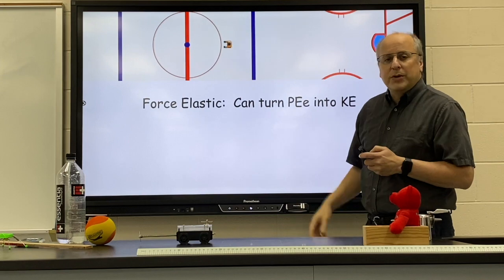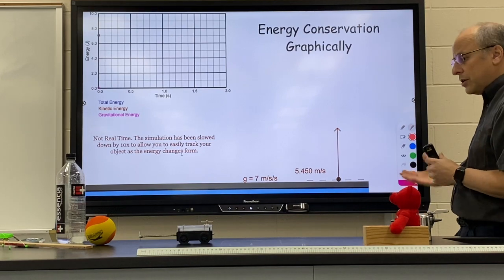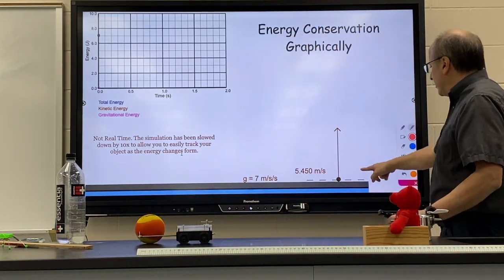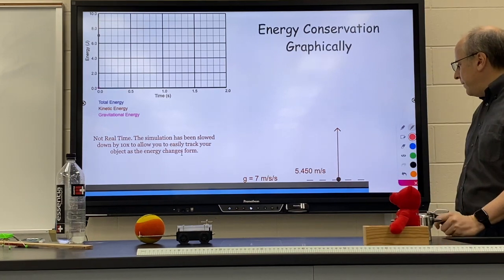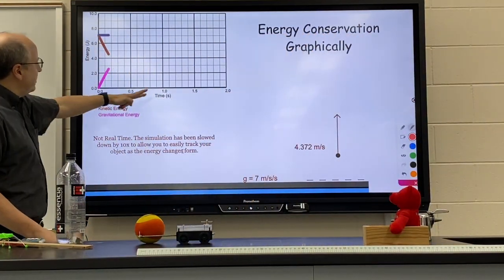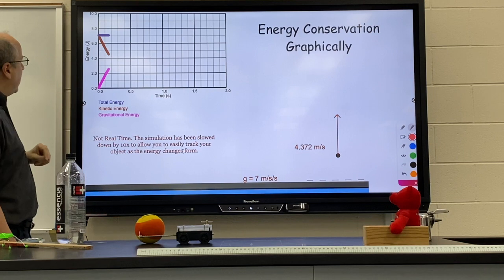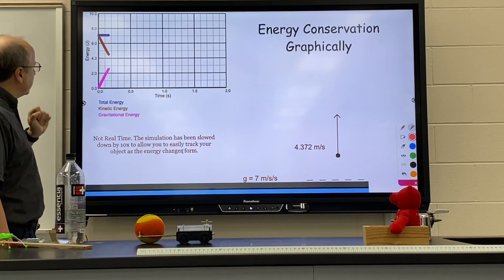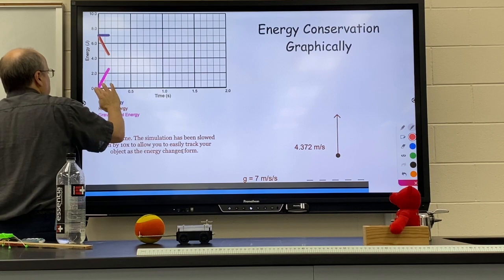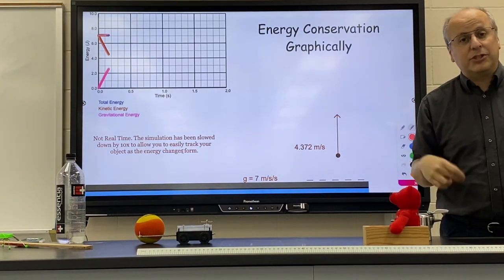Graphically, I think this is really helpful, so make sure you have a nice sketch of this. We're going to start with a ball, throw it up, and watch it as soon as it leaves my hand — it's going to be moving upward at 5.45 meters per second. From the graph of energy versus time, it starts with all kinetic energy: about 7 joules of kinetic energy and zero joules of gravitational potential energy. As it goes up, you can see the kinetic energy going down and the gravitational energy going up, and most importantly, in blue, the total energy stays constant.